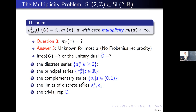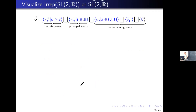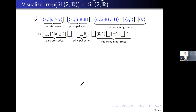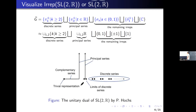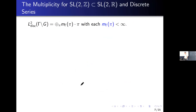We can visualize the representations of SL2R. There are three main parts: discrete series, principal series, and the remaining representations. If you treat them as sets, there is a discrete union of three parts: integers, two copies of real lines, an open interval, and three points. So we can identify each representation with a point on a real plane.